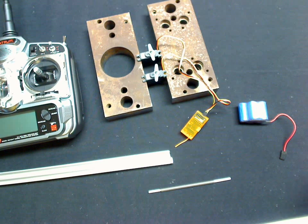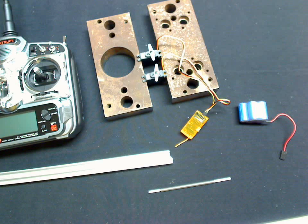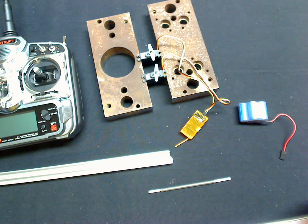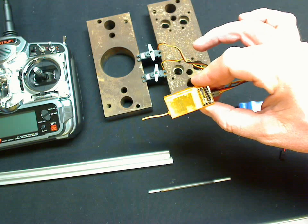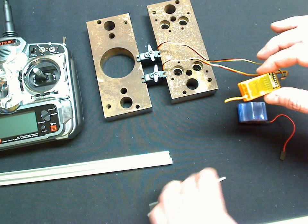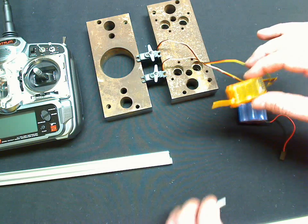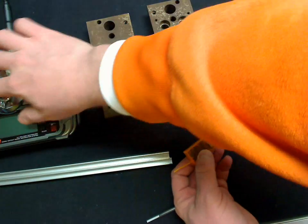Alright, I'm going to do a range test of the Orange receiver, the Spectrum compatible DSM2 in the hard shell case. This is the 6 channel. What I'm going to do is actually try to get it to fail first. I'm going to power on the transmitter.